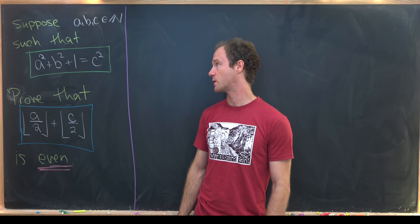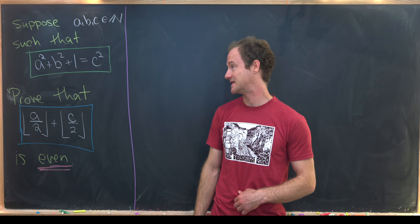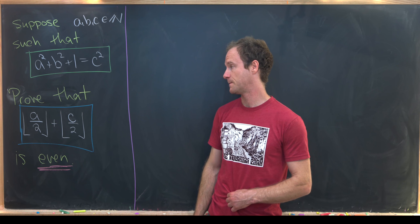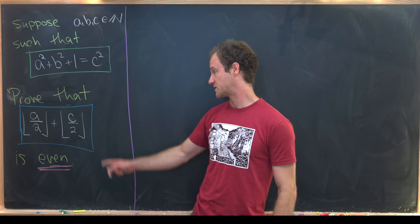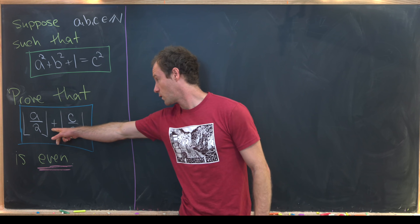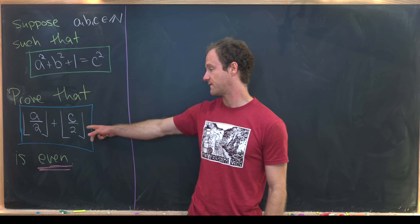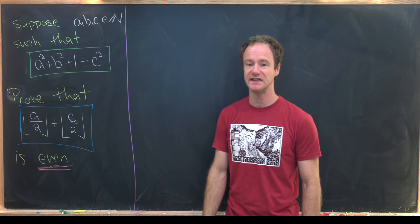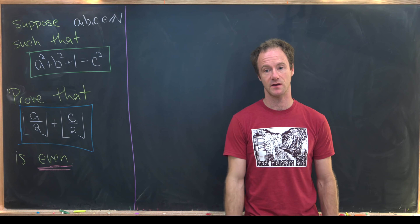So a squared plus b squared plus one is equal to c squared. And from there we want to prove that the floor of a over two plus the floor of c over two is even.